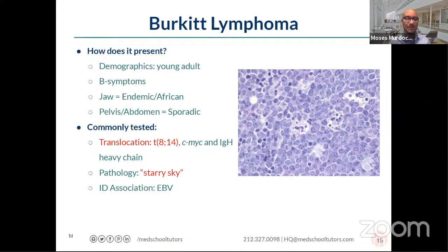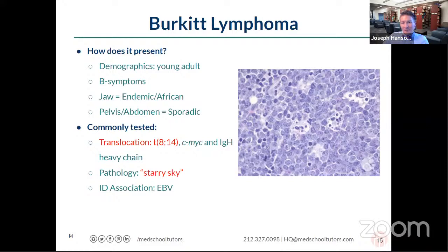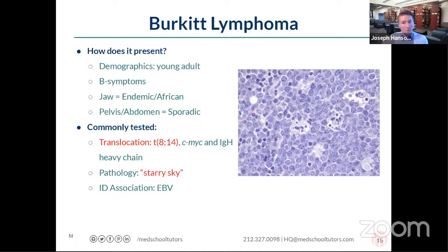The IGH heavy chain is really important in all lymphomas. Many translocations in lymphoma involve the heavy chain. Basically all cancers involve either turning on oncogenes or turning off tumor suppressor genes — either removing the brakes or stepping on the gas. With lymphomas, that's why you see these translocations pop up so frequently.